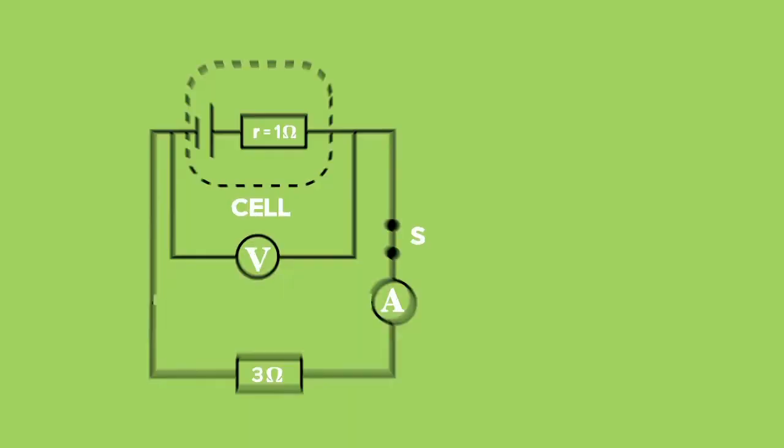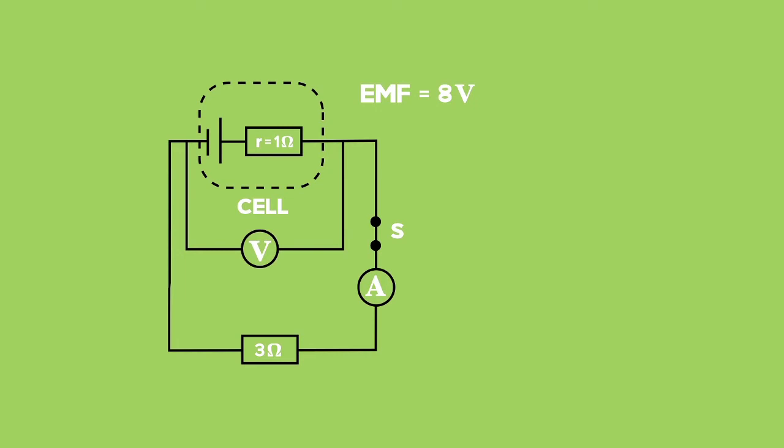Let us apply this to a simple circuit to see how all of this works. Here we see a simple series circuit. A cell with an internal resistance of 1 ohm is connected to a 3 ohm external resistance with a switch. Let us figure out the voltage and current readings in the circuit.